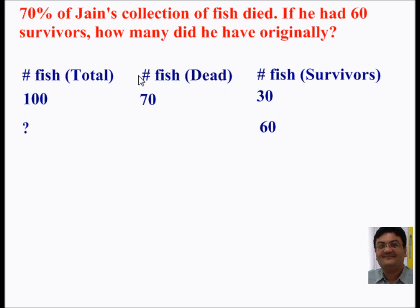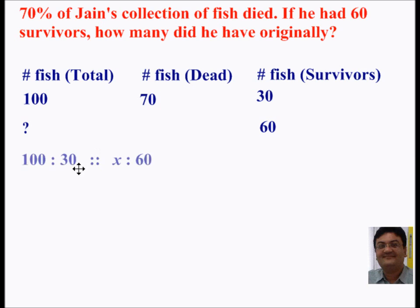We are not concerned with the dead fish part — that part only helps us find out this particular data. So let's write down the proportion equation, which is 100 is to 30 equals x is to 60.